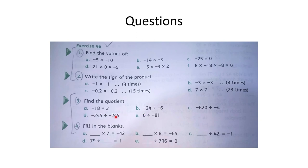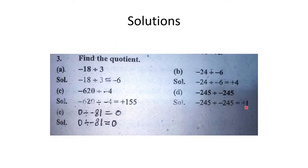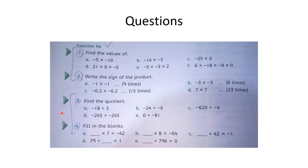D part: minus 245 ko minus 245 par divide karna hai — same number, same sign. Minus minus hamesha plus hota hai. Jab same number ko ek doosre par divide karein to answer plus 1 aata hai.